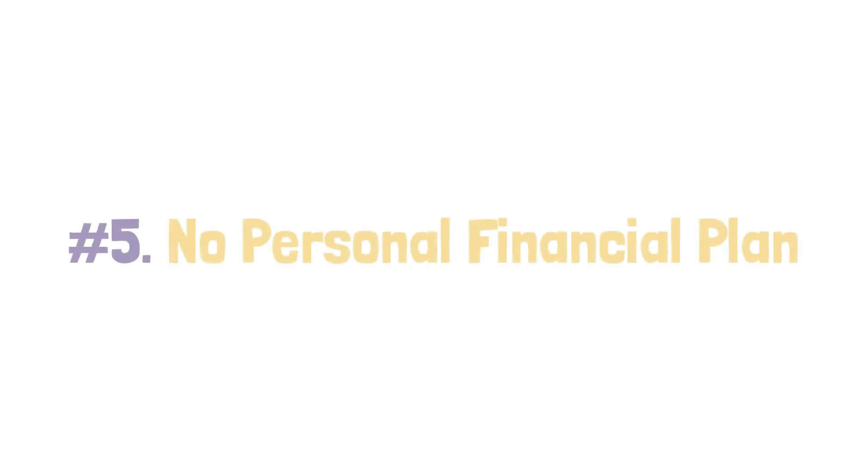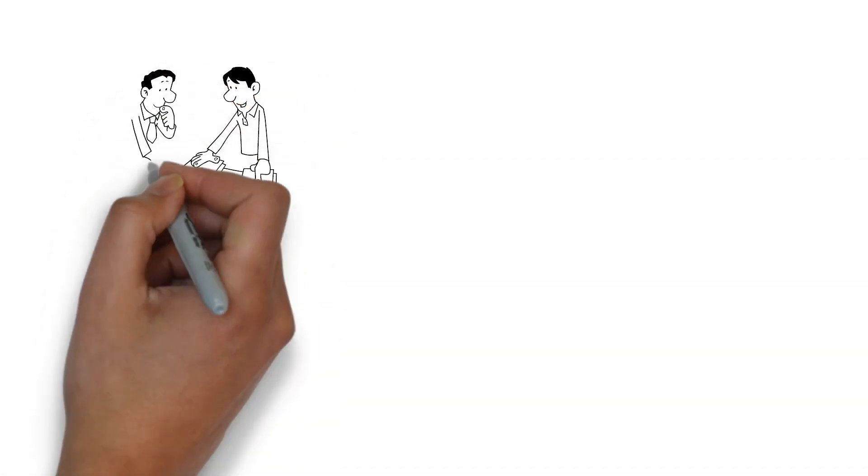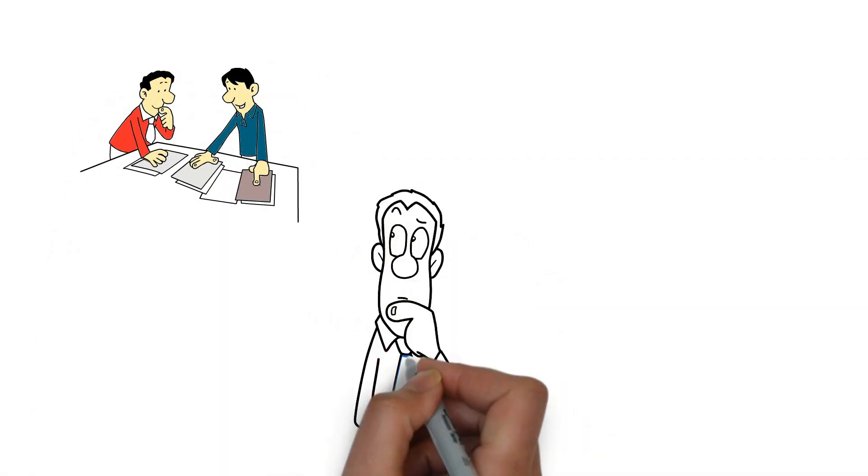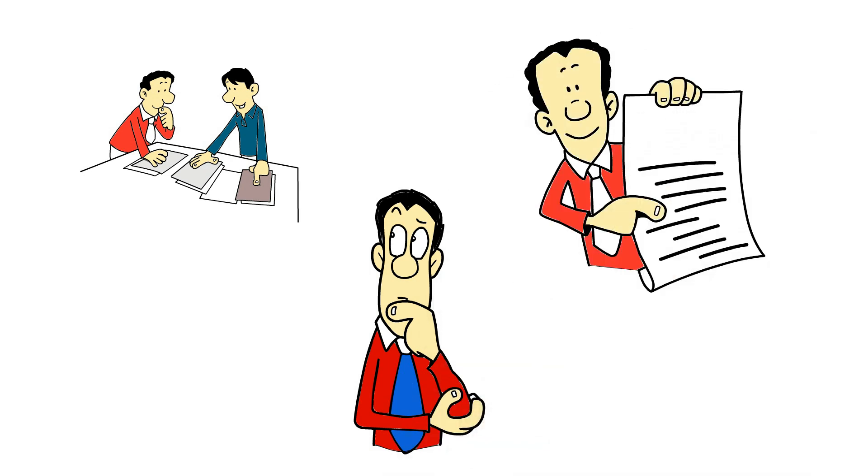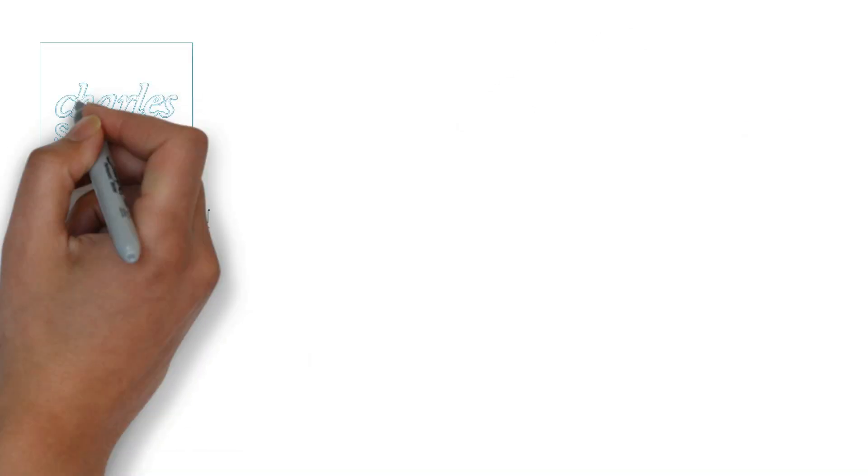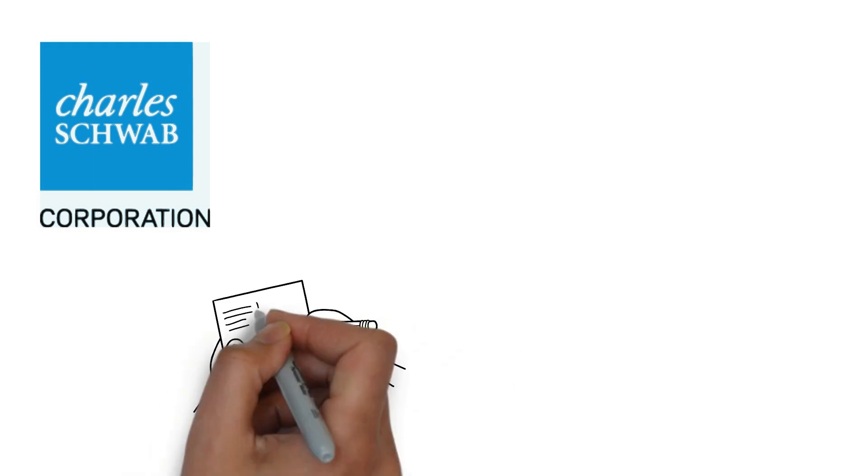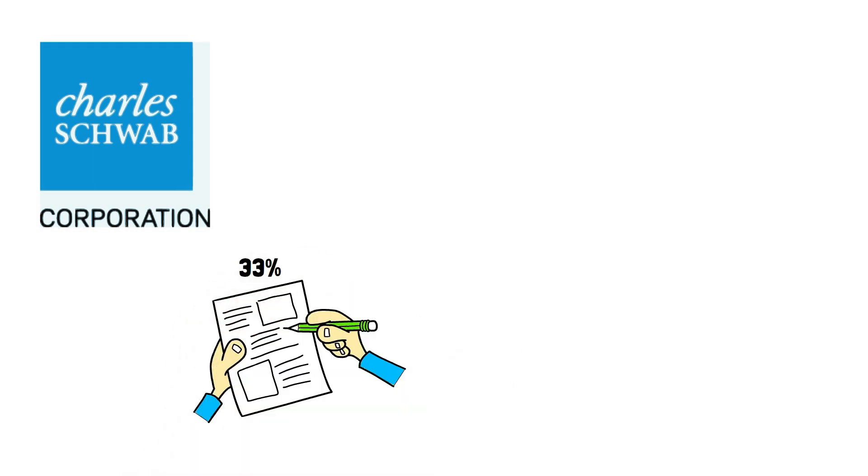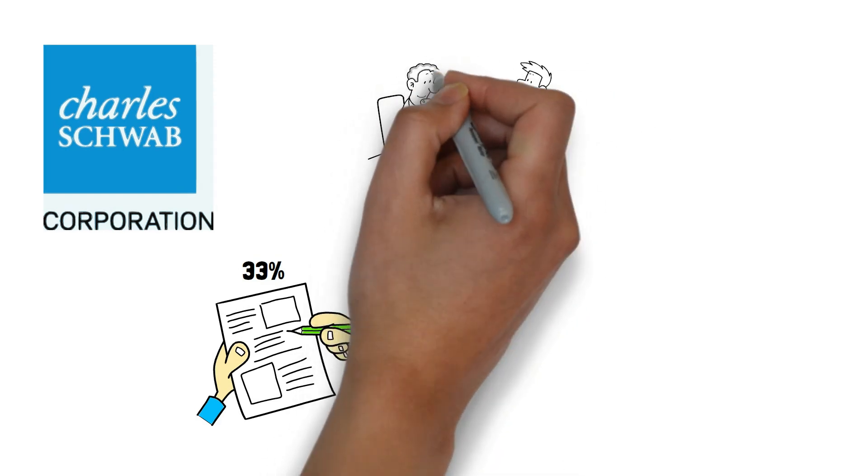Number 5: No Personal Financial Plan. Many people lack a personal financial plan, and if you find yourself in the majority, it's time to take action. According to Schwab's 2021 Modern Wealth Survey, less than one-third, or 33%, of American adults have a written financial plan. Without a solid financial plan, you are susceptible to making poor money decisions that can trap you in a cycle of financial instability and debt.